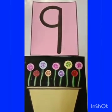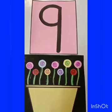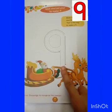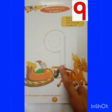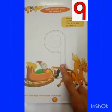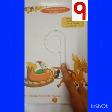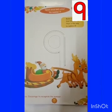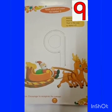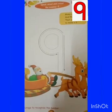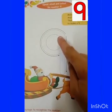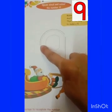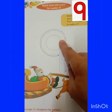Now can you tell me which number is this? Yes, this is number nine. Number nine — make a loop and then a line. That's the way to make a nine.